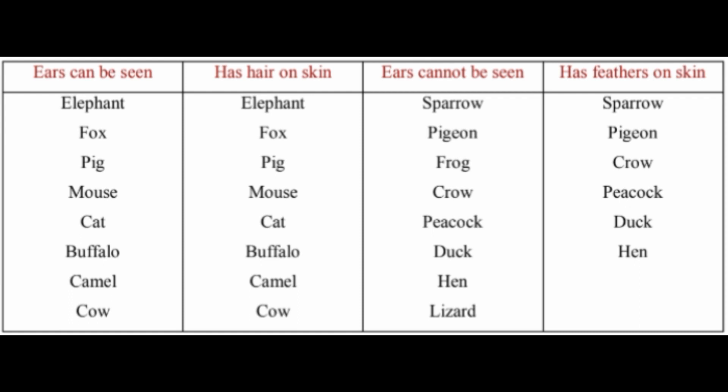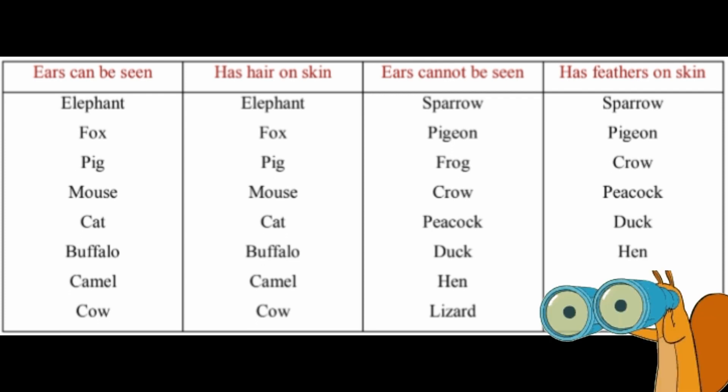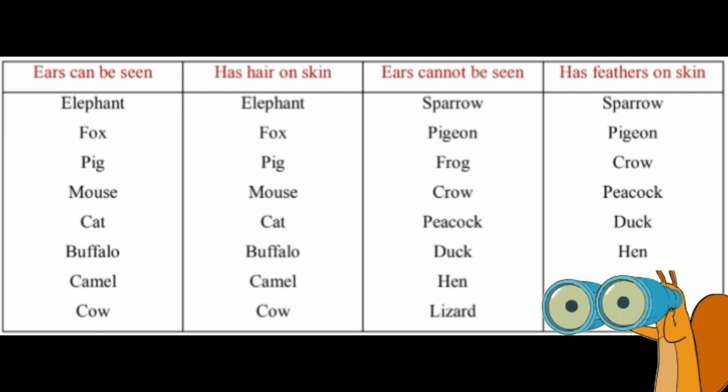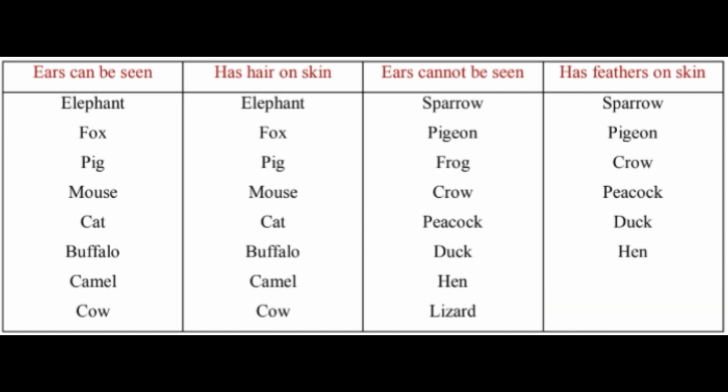The animals which have hair on their skin are: elephant, fox, pig, mouse, cat, buffalo, camel, cow. Animals whose ears cannot be seen are: sparrow, pigeon, frog, crow, peacock, duck, hen, lizard.